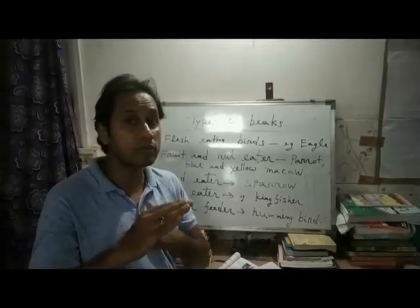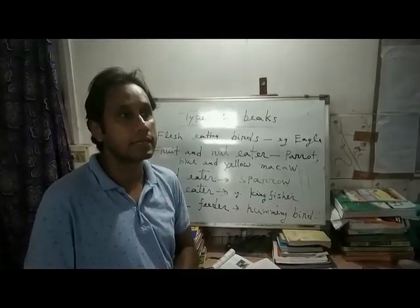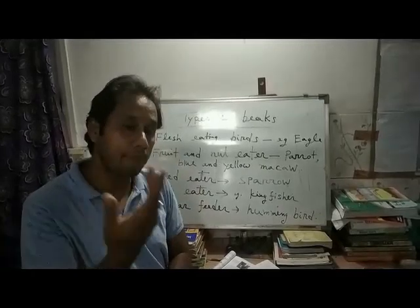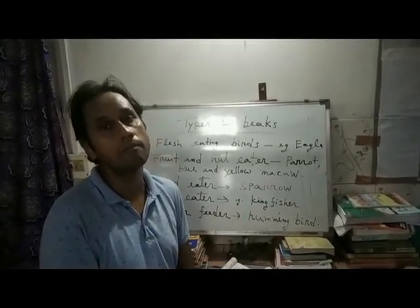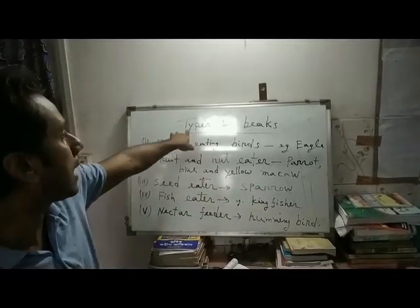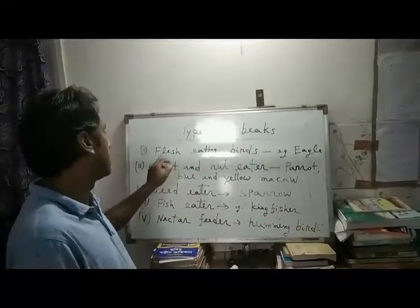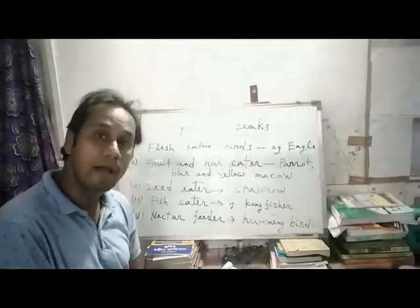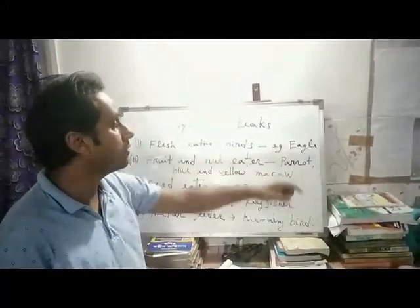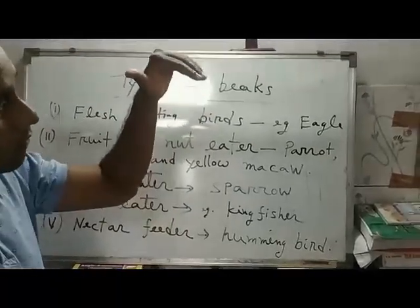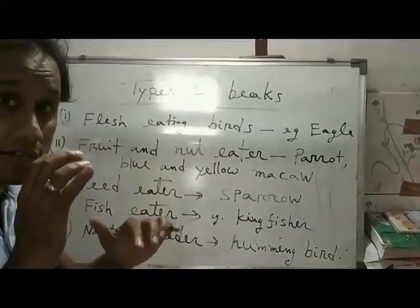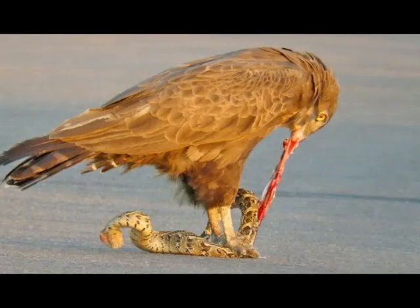According to their food habit, depending upon their food, different birds have different types of beaks. For example, the eagle — they have a sharp, hook-like, curved beak, like this, to tear the flesh of animals.